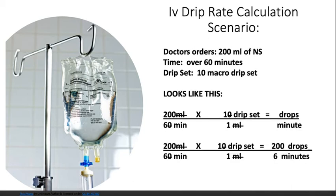If you canceled out the common numerators and denominators, you end up with 200 × 1 = 200 drops on top, and 6 × 1 = 6 minutes on the bottom. Now divide 6 into 200 — go ahead and do that, feel free to press pause, and then we'll go to the next slide.